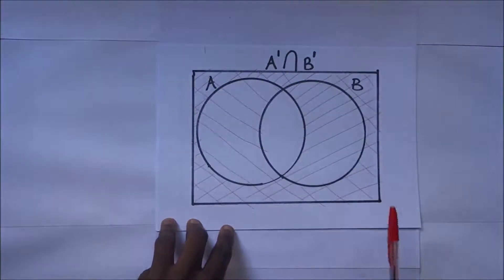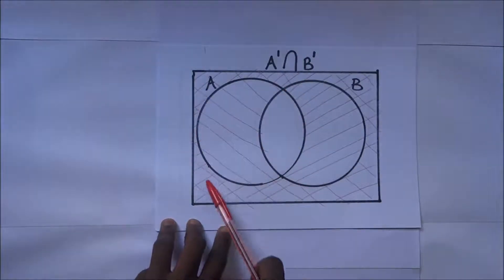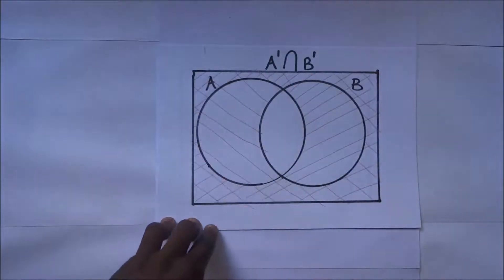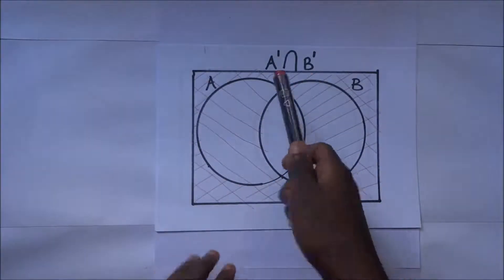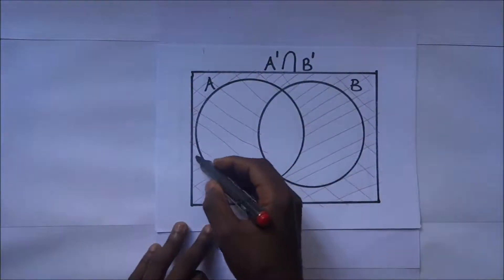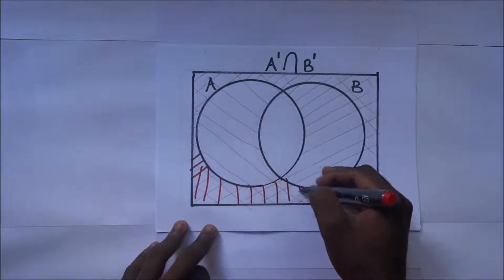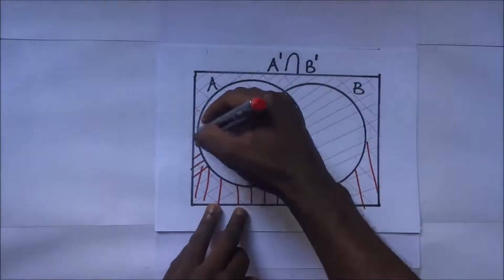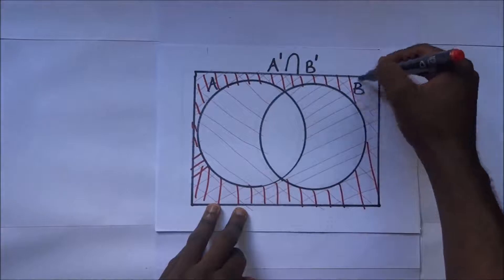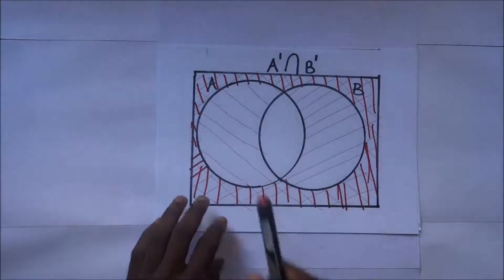You discover that set A complement intersection B complement is where these lines are intersecting, and you find that they are intersecting outside. So shading A complement intersection B complement means you are actually shading this part outside. That is set A complement intersection B complement.